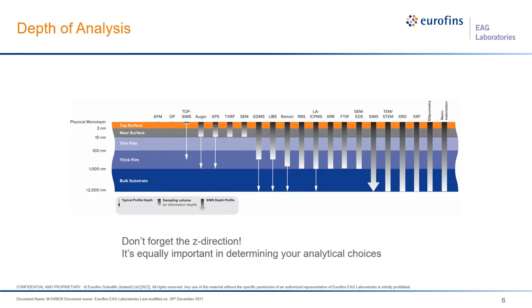When making analytical choices, we shouldn't forget the Z direction — how sensitive we are in depth. For example, AFM would be extremely surface sensitive, while nano-indentation can also be extremely surface sensitive but can go all the way deep into the bulk material to get information out of the material.